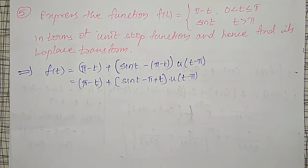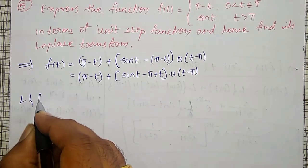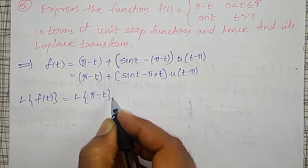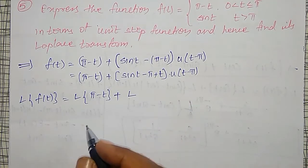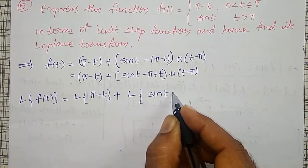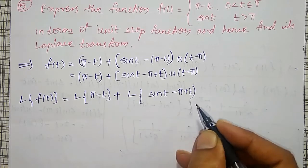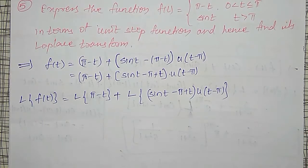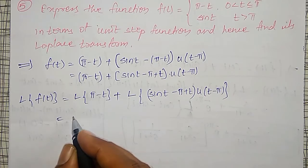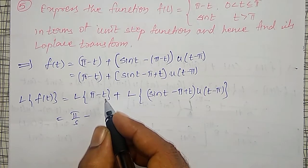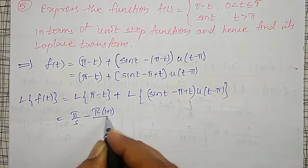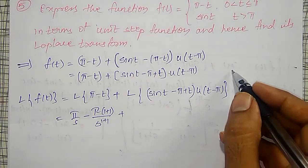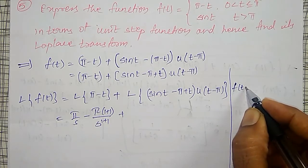To find the Laplace transform, L{f(t)} = L{π − t} + L{(sin t − π + t) · u(t − π)}. Applying linear property: L{π − t} = π/s − Γ(1+1)/s^(1+1) = π/s − 1/s². For the second term with the unit step function, I again use the shifting property.